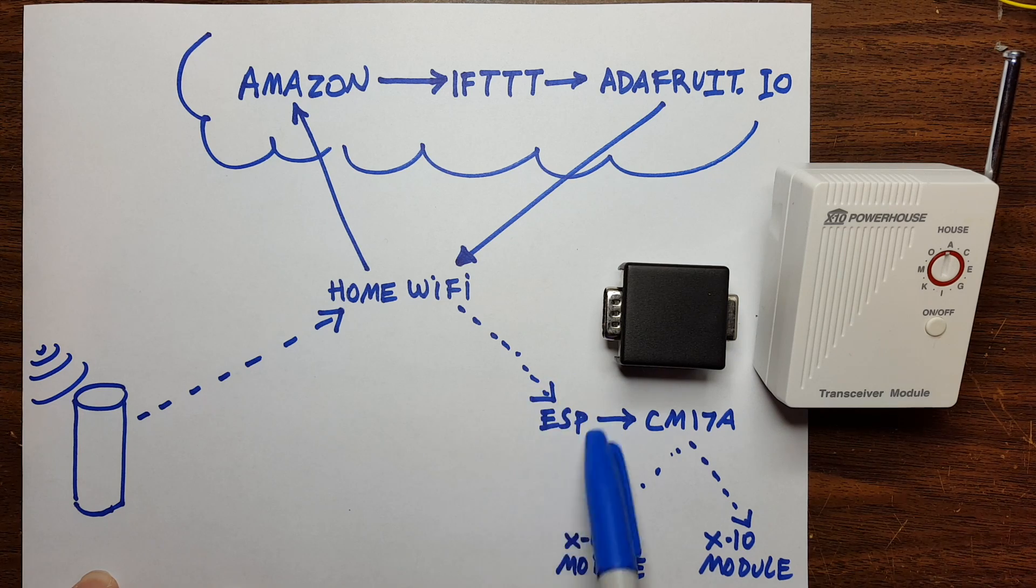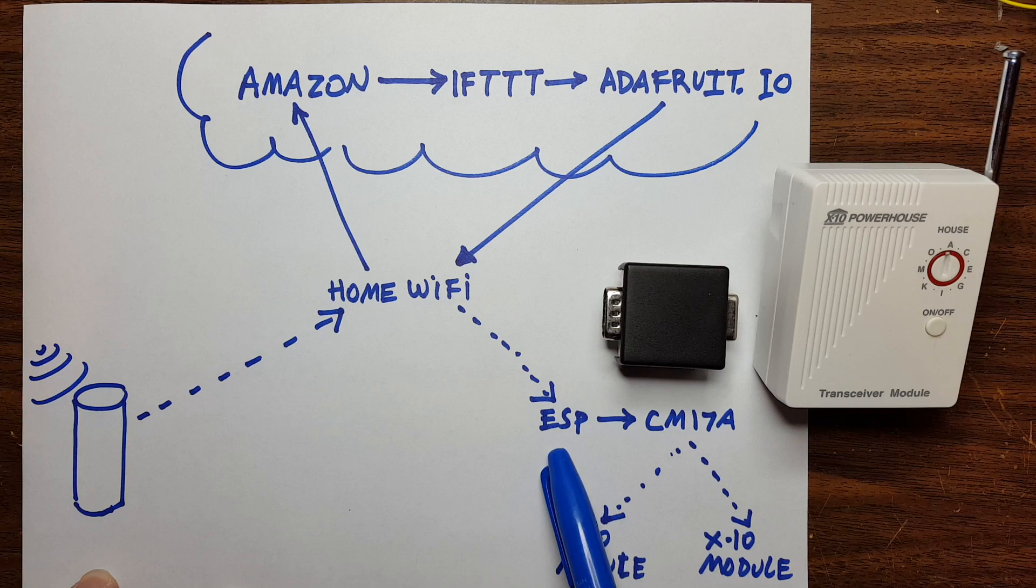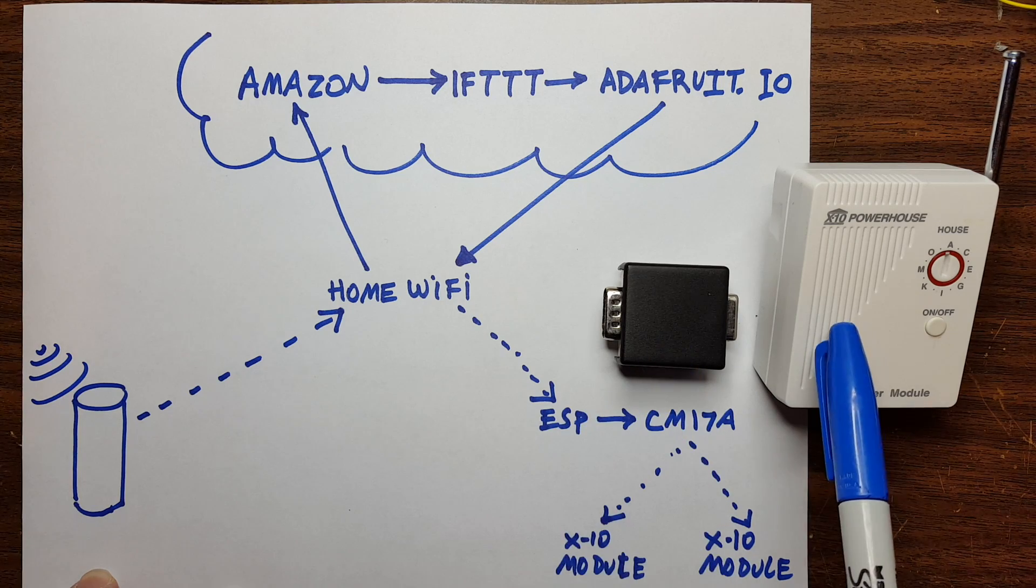In my previous video I showed how this could turn on and off an LED, but an LED could be replaced by anything. In this case I want to turn on and off my workbench light. So instead of a relay,